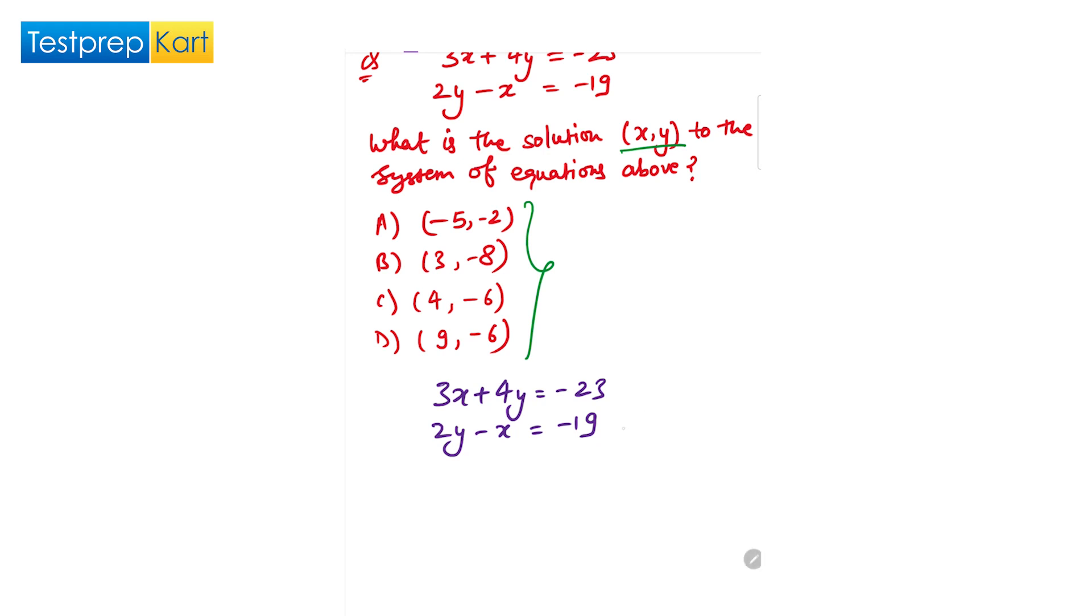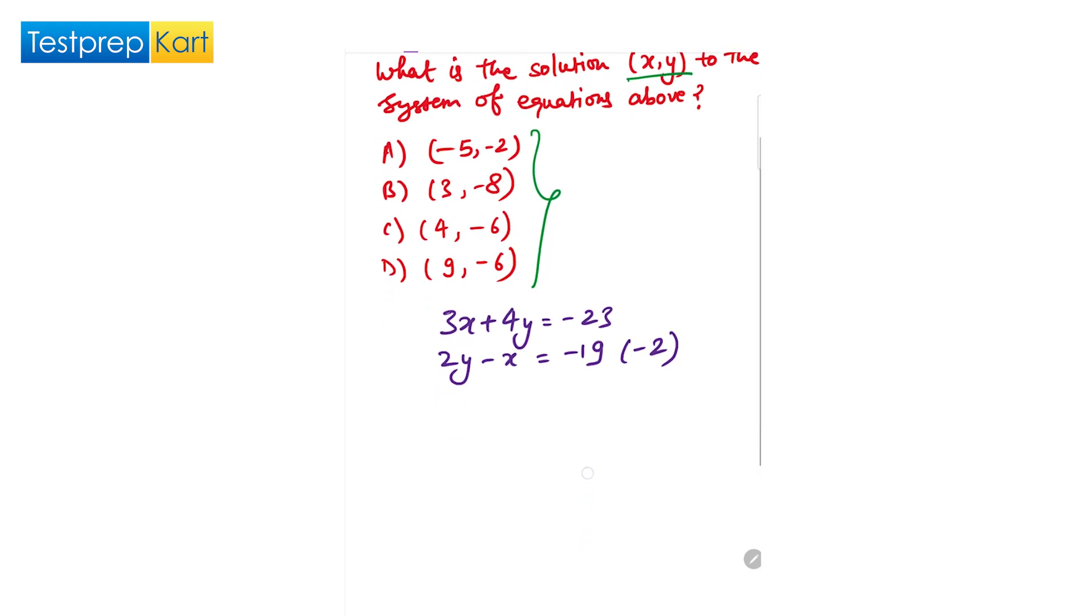Now, to make this happen, we have to multiply by minus 2 in this given equation. So we can find the value of x by making the y terms equivalent, and we will cancel them out.